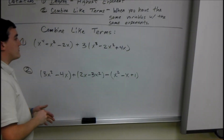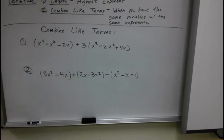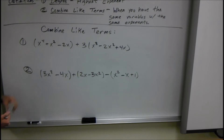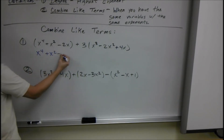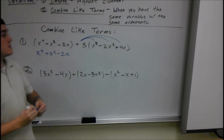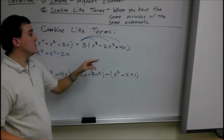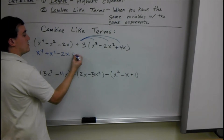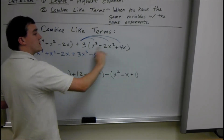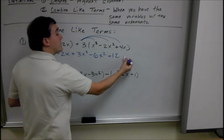Next I'll be doing a few examples on combining like terms. Our first problem: we have x to the fourth plus x squared minus 2x plus 3, times all of x cubed minus 2x squared plus 4x. The first thing we want to do is distribute anything we can. Here we have nothing to distribute, so we don't even need those parentheses — we can just drop them. This is x to the fourth plus x squared minus 2x. Here we have to distribute the 3, so that goes to all three of the terms. We get plus 3x cubed minus 6x squared, and positive 3 times 4x is plus 12x. Then from there, just add like terms.